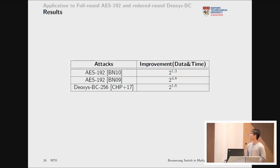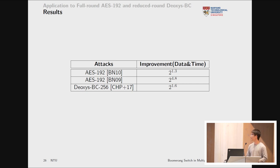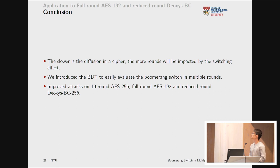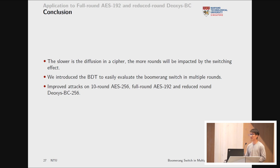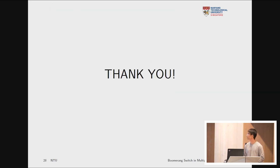Results: for the best attack on AES-192, we achieve an improvement by a factor of 2^{1.3}. We re-evaluated the boomerang distinguisher of the first attack and found it should be better by a factor of 2^{4.8}. We also used BDT to improve DEOXYS-BC-256 by a factor of 2^{1.6}. In conclusion: slower diffusion means more rounds are impacted by the switching effect; BDT enables easy evaluation of boomerang switch in multiple rounds; we propose attacks on 10-round AES-256, four-round AES-192, and DEOXYS-BC-256.